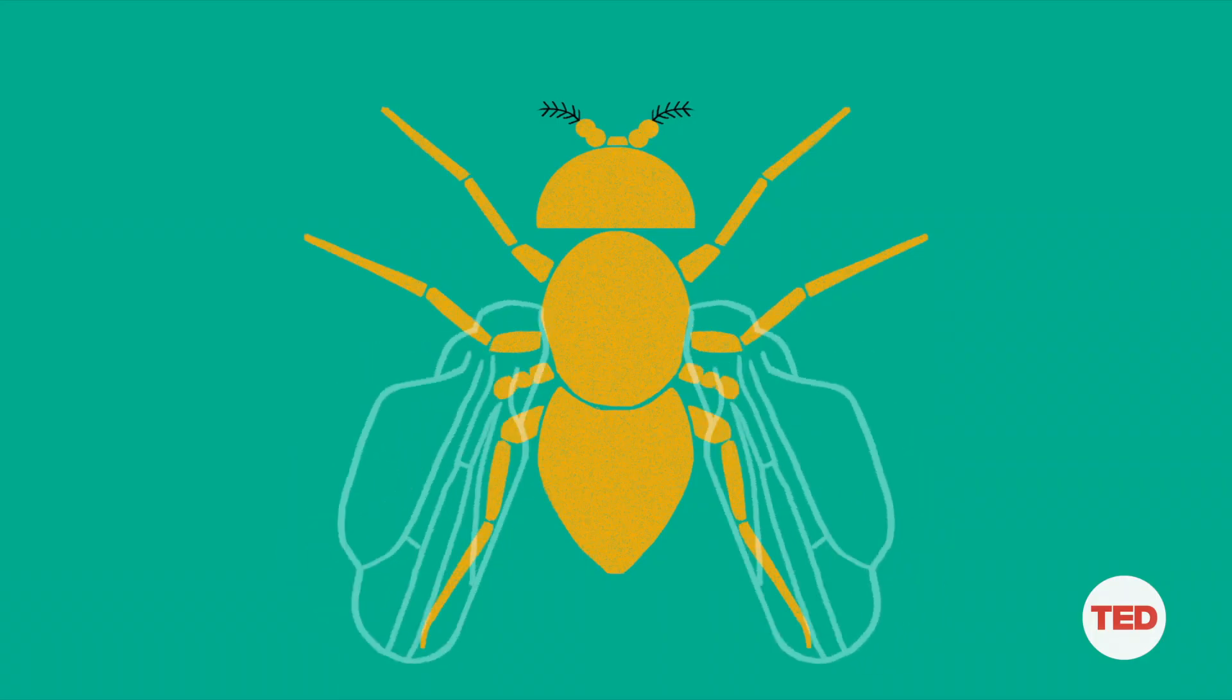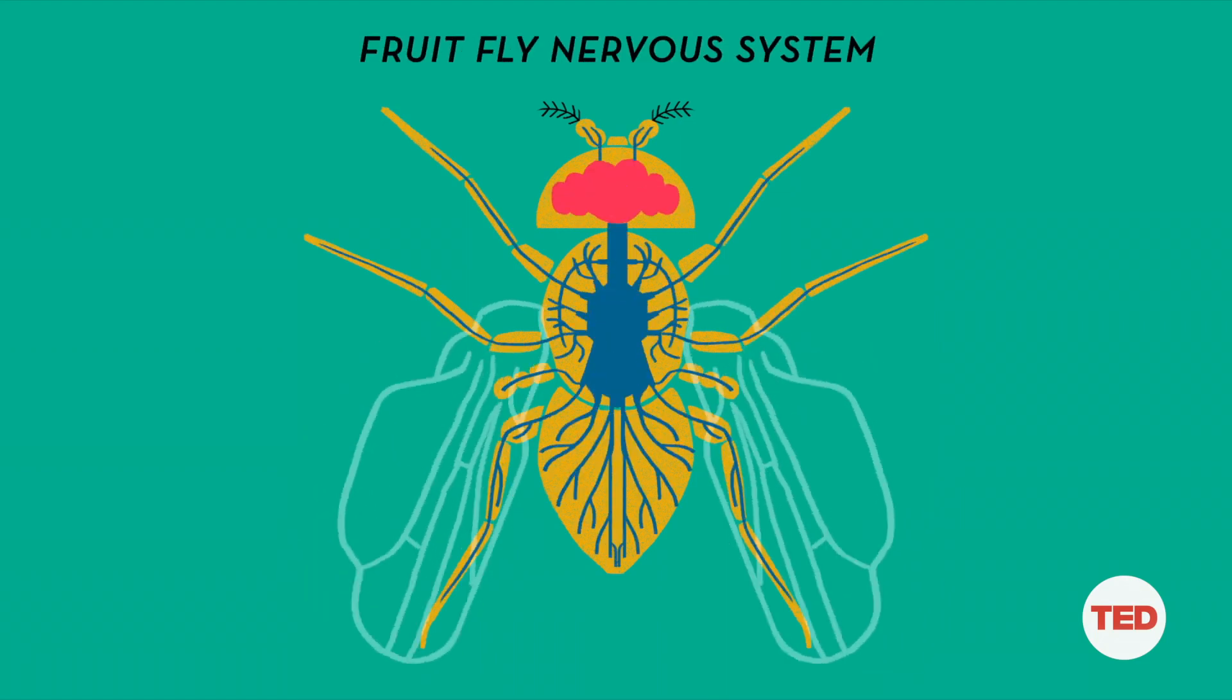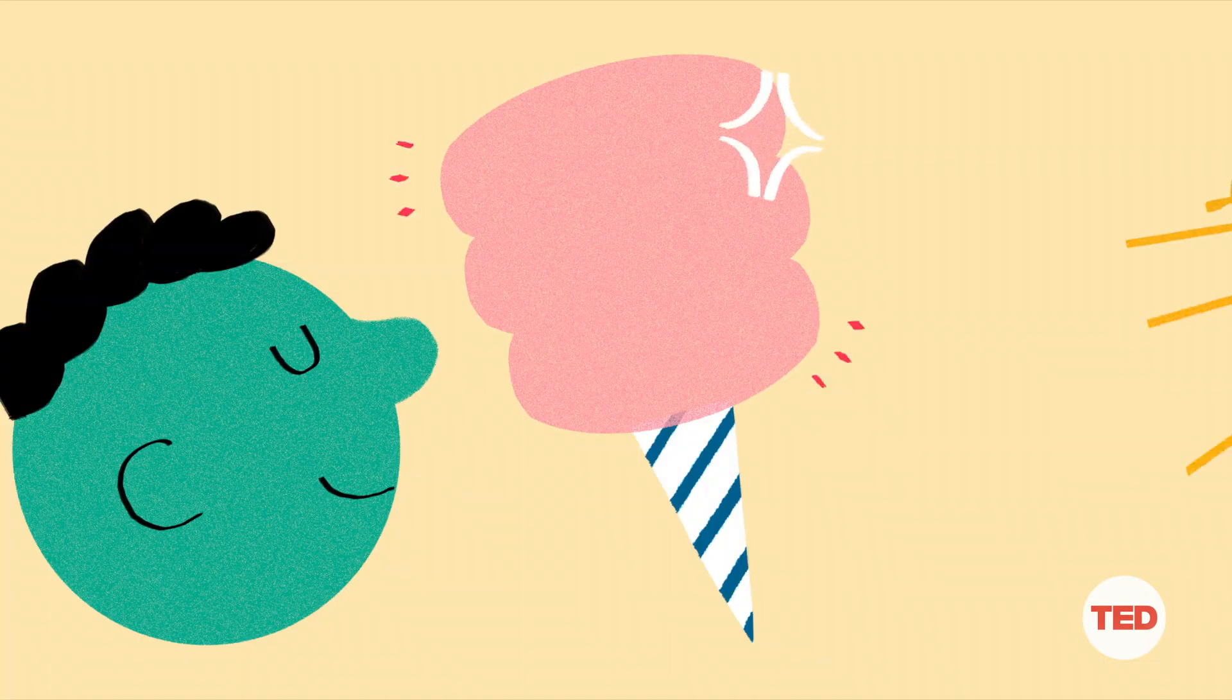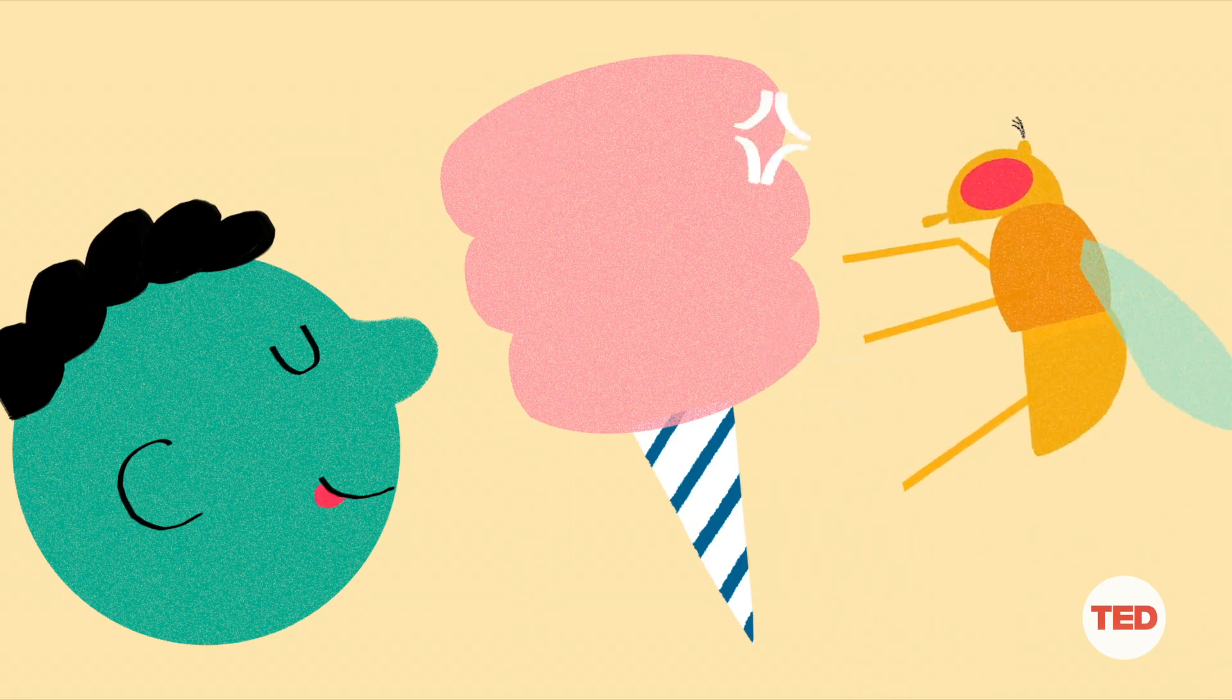The reason why we experiment with fruit flies is they have a small enough nervous system that gives us a fighting chance to really understand what's going on. And believe it or not, their taste buds are very similar to ours.